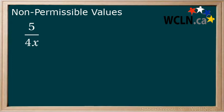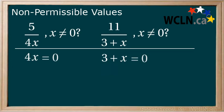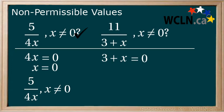Now consider a couple of other examples where we are dividing by a variable: 5 over 4x, and 11 over 3 plus x. Is 0 our non-permissible value for each of these cases? We take the denominator and make it equal to 0 and solve for x. For 4x equals 0, divide both sides by 4 and we have x equals 0. So we write 5 over 4x, where x does not equal 0.